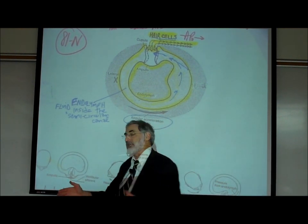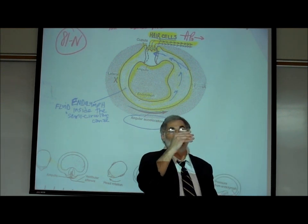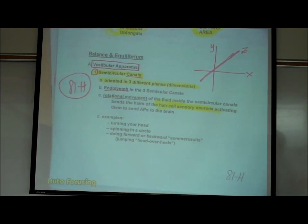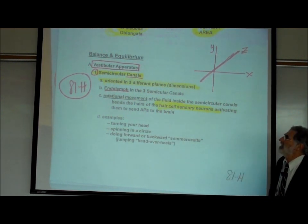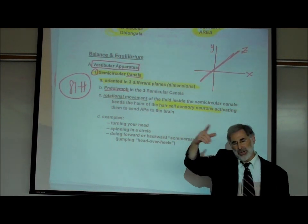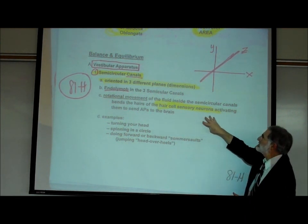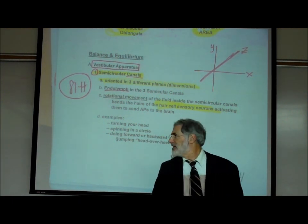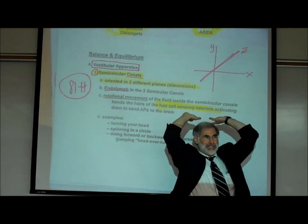Not only do you know whether you're spinning clockwise or counterclockwise, you would also know if you're rotating forward or backwards, vertically in space, or front to back. Going back to page 81H, the vestibular apparatus has semicircular canals oriented in the three planes or dimensions of space. There is endolymph in these canals — rotational or angular movement of the fluid bends the hairs of the hair cells, activating them to send action potentials to your brain.